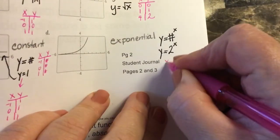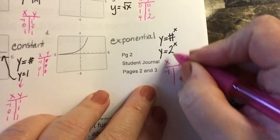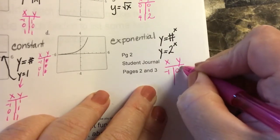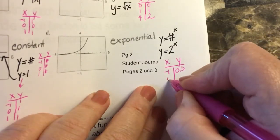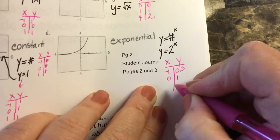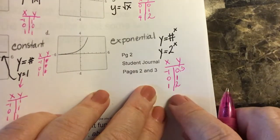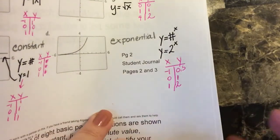For this exponential you're going to have (-1, 0.5), and (0, 2) to the 0 would be 1, and (1, 2) to the first power would be 2. So that's your ordered pairs for that parent function, 2 to the x.